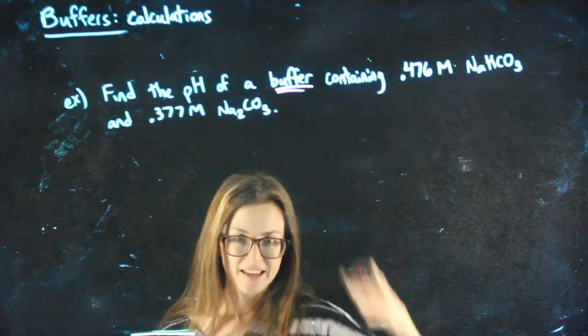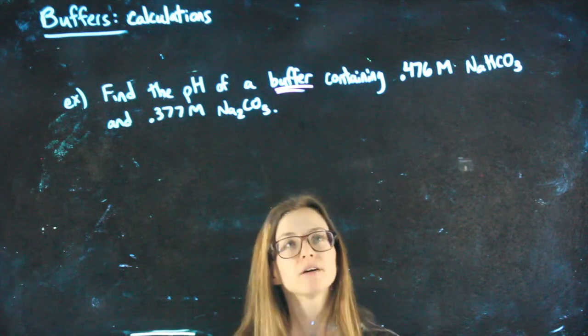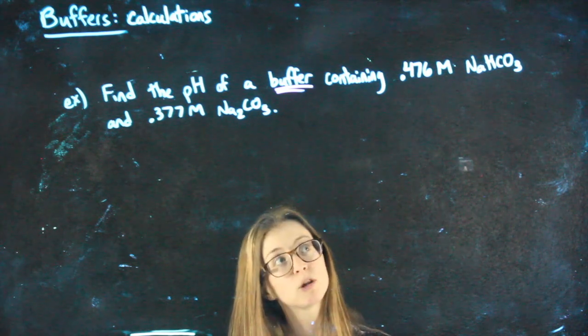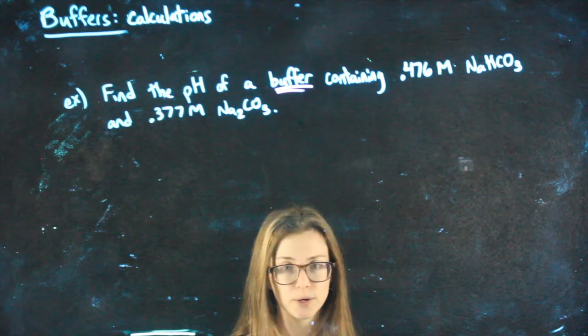It will always say the word buffer, so you don't have to worry about how you'll know. Find the pH of a buffer containing 0.476 molar NaHCO3 and 0.377 molar Na2CO3.